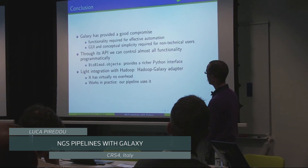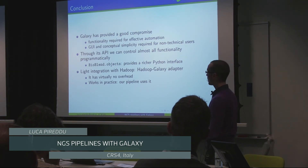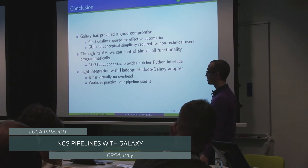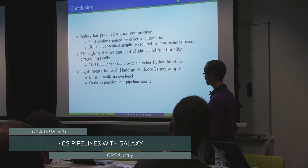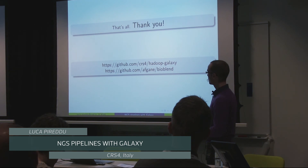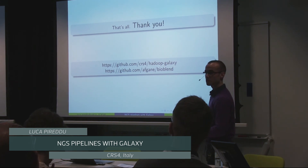To wrap things up, Galaxy for us has provided a good compromise between the functionality required for effective automation and the GUI and conceptual simplicity that we can use to expose these services to non-technical users. Through its API we can control this functionality programmatically, and we've implemented this BioBlend object wrapper to provide a Python interface. The Hadoop Galaxy integration works in practice with virtually no overhead - we use it in our pipeline. The Hadoop Galaxy component and the pipeline component are open source and available on GitHub.